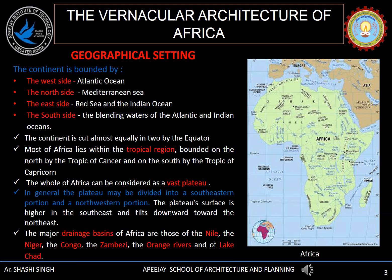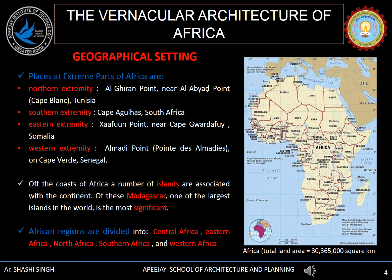The surface of the plateau is higher at the southeast and tilts downward towards the northeast. The major drainage basins of Africa are the Nile, Niger, Congo, Zimbabwe, Orange River and Lake Chad. The extreme points of Africa are Tunisia on the north, South Africa on the south, Somalia on the east and Senegal on the west. There are many islands associated with Africa, of which Madagascar is the most significant.